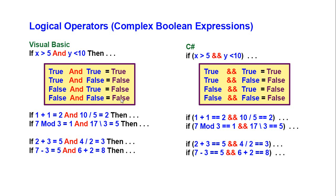If both sides are false, the expression is false. Here are some examples: 1 plus 1 equals 2 is true, and 10 divided by 5 equals 2 is true, so that whole expression is true. 7 mod 3 equals 1 is true, and 17 integer division 3 equals 5 is true, so that whole expression is true. For the next one, 2 plus 3 equals 5 is true, but 4 divided by 2 equals 3 is false, so that whole expression evaluates to false. If 7 minus 3 equals 5 is false, even though the other side is true, the whole expression is false.